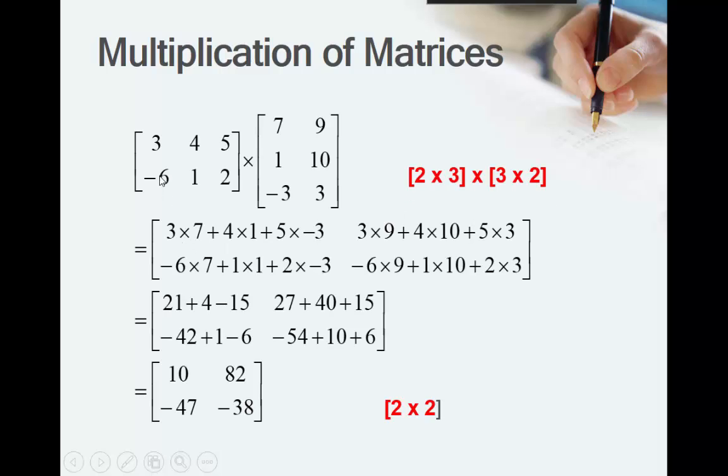So, just to go through how we do that, we're going to go 3 times by 7, we're going to go 4 times by 1, and we're going to go 5 times by negative 3. And that will give us position number 1, 1. Row 1, column 2, 3 times by 9, 4 times by 10, 5 times by 3. Row 1, column 2, position 1, 2.